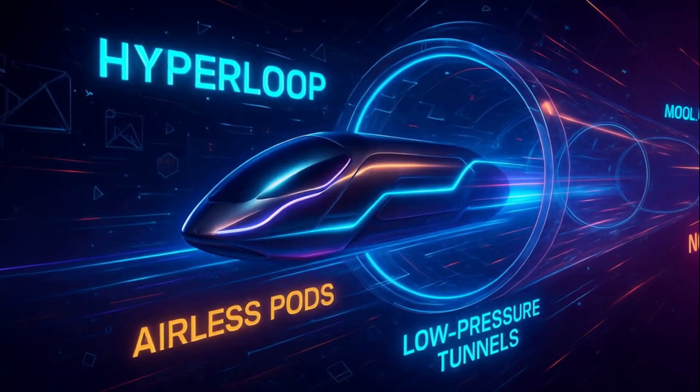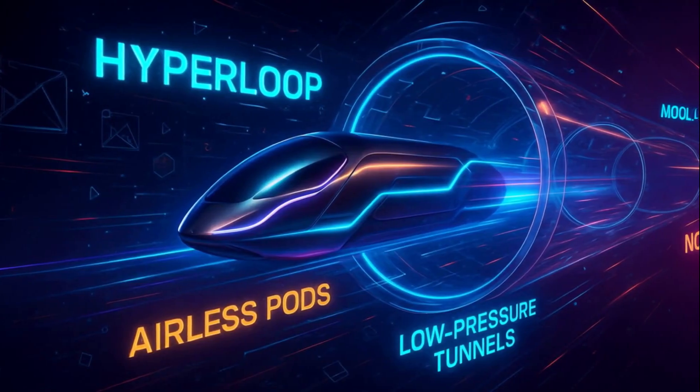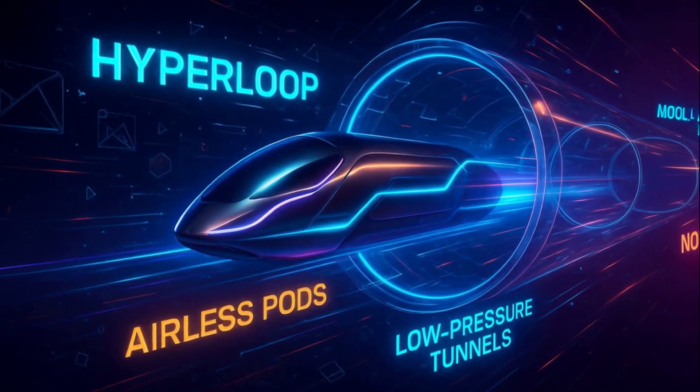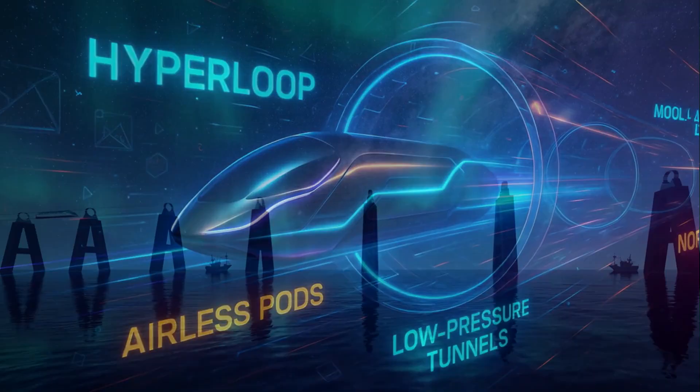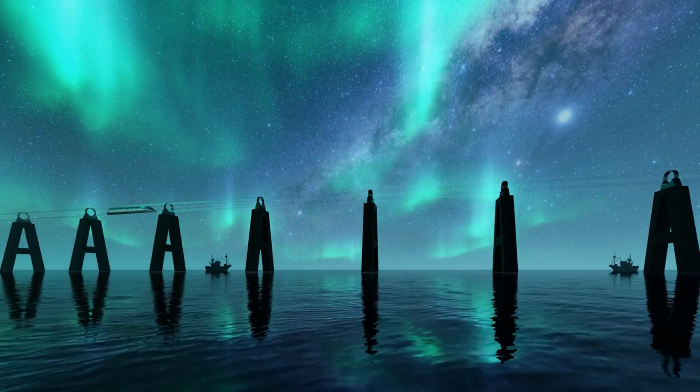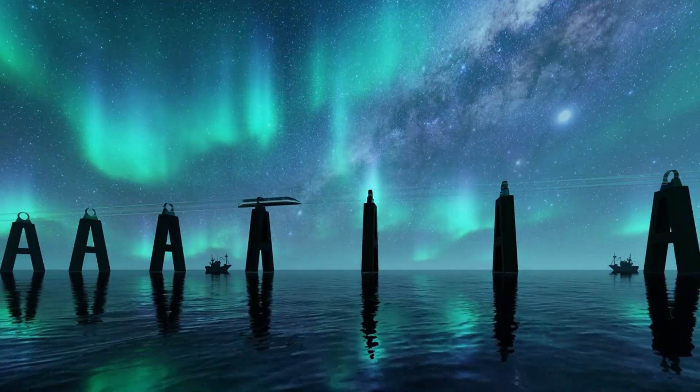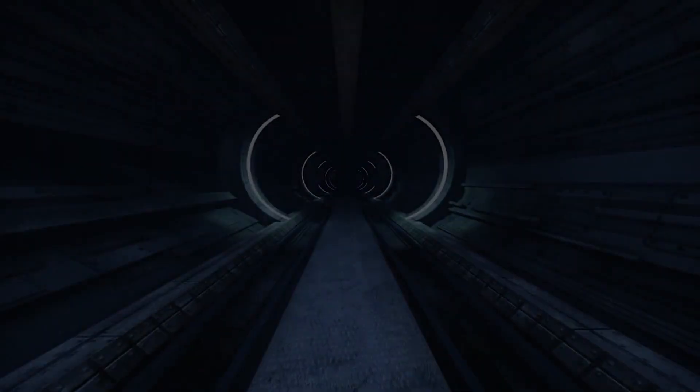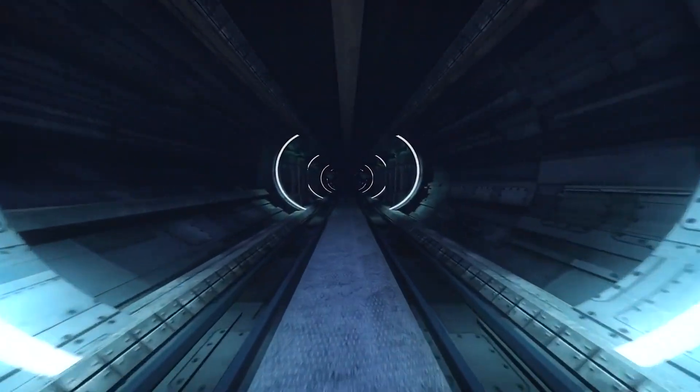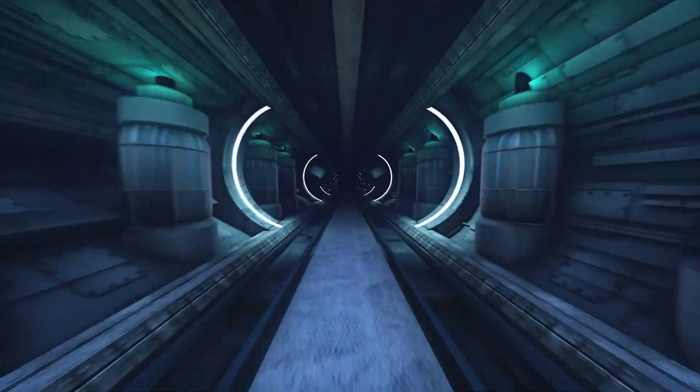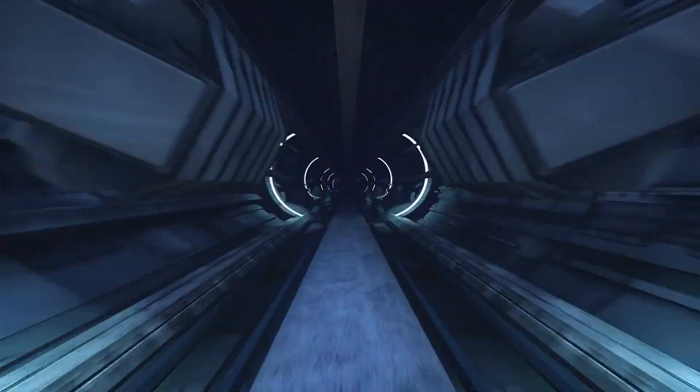Meanwhile, the Hyperloop, first popularized by Elon Musk, uses airless pods blasted through low-pressure tunnels at near supersonic speeds, with concepts under development in the U.S., UAE, and India. But here's the twist: while Hyperloop dazzles with futuristic flair, real-world vacuum maglev systems are already breaking ground.